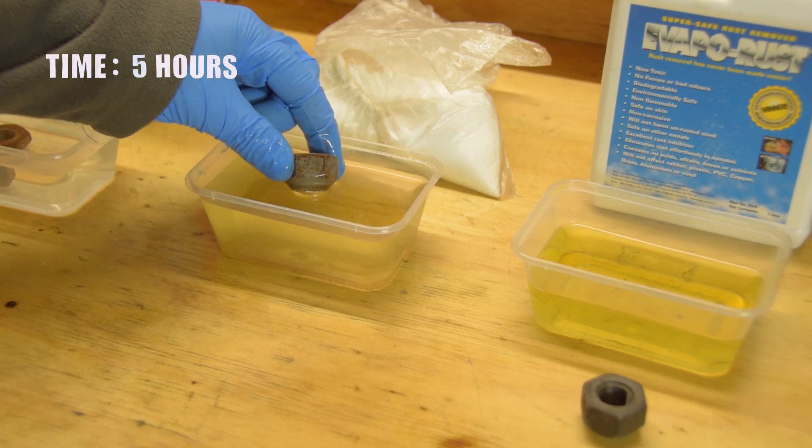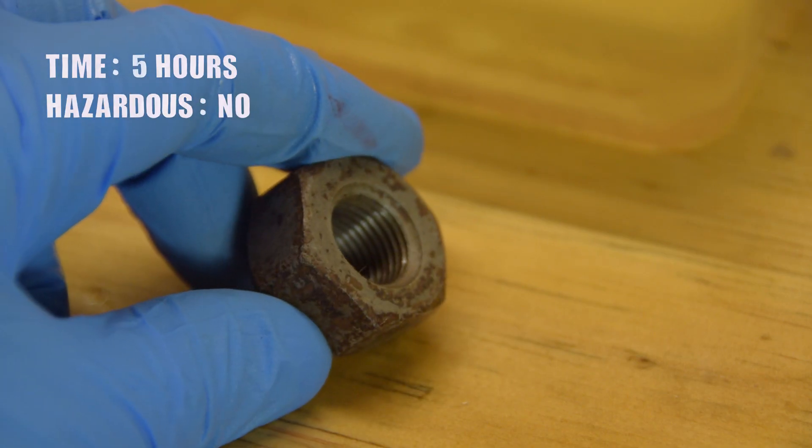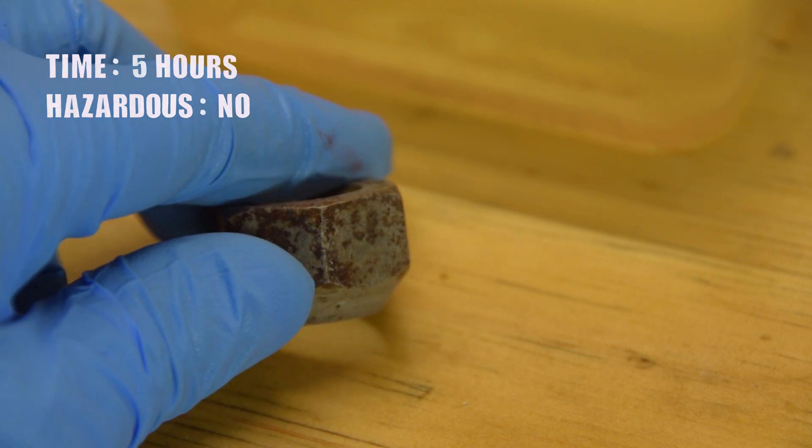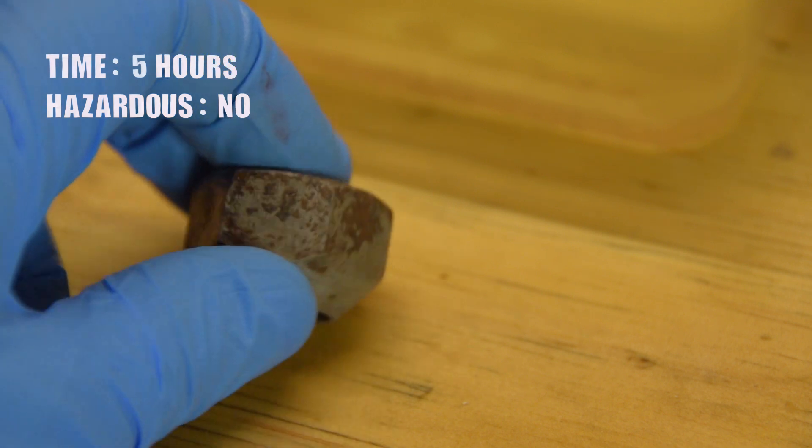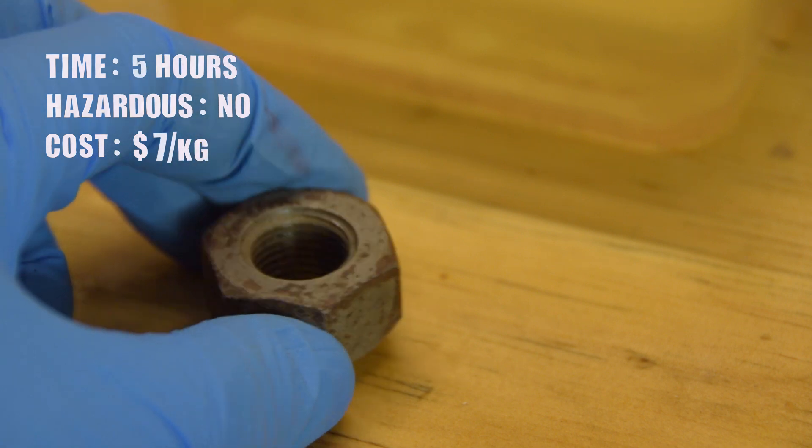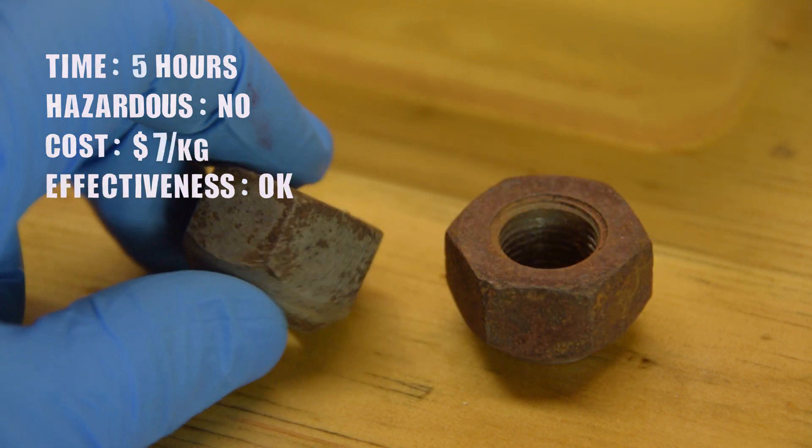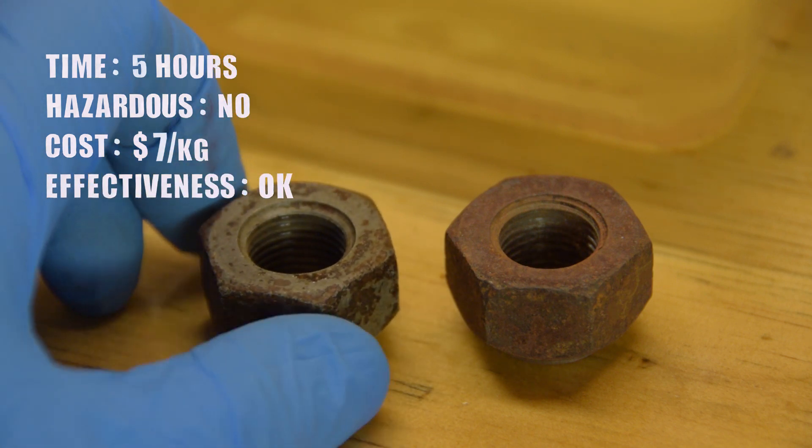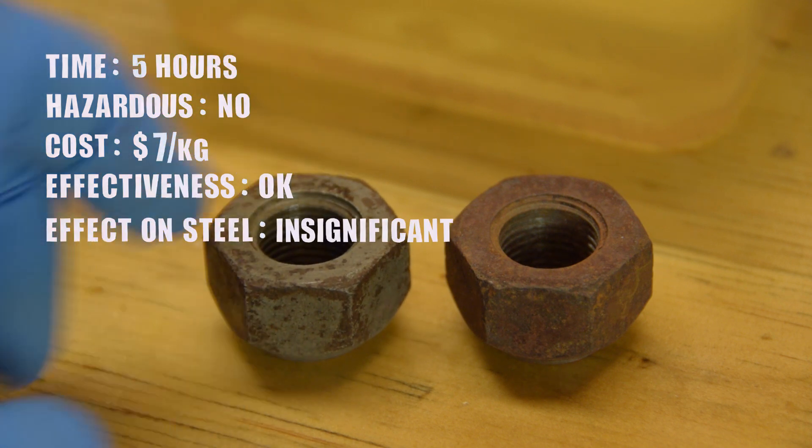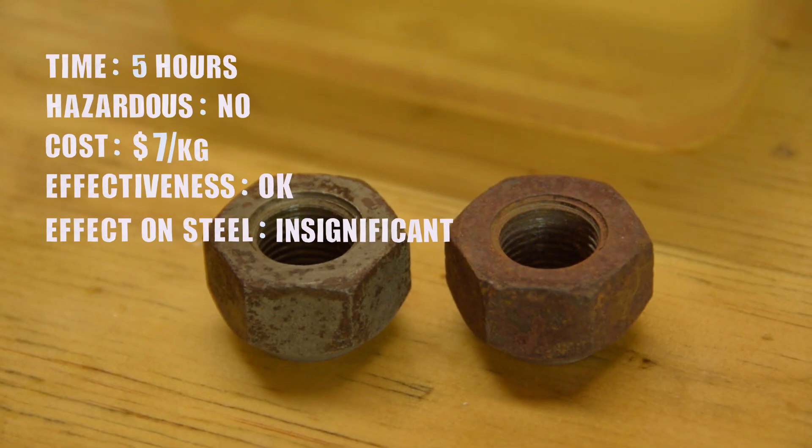Just like vinegar, I left the nut in citric acid for about five hours. Citric acid is very mild and safe to use. You can buy it from the baking aisle of the supermarket in small quantities, but that's a pretty expensive way to get it. I buy mine from a bulk bin store for about seven New Zealand dollars per kg. It's moderately effective, depending on the part. I wouldn't use it to try and get rust out of deep pitting. Citric acid will corrode good metal, but I've never noticed any adverse effects. I'd think it would take days to see any real effect on steel.